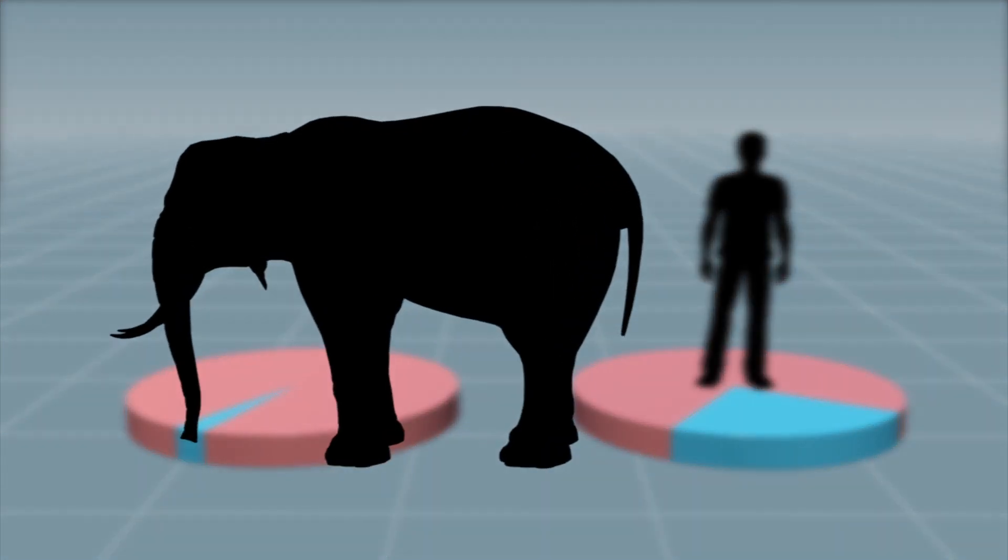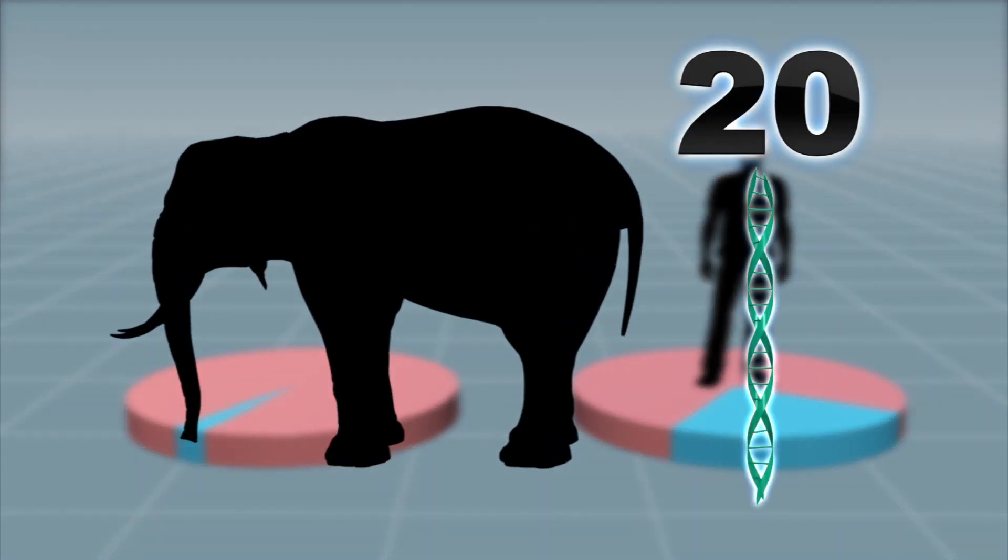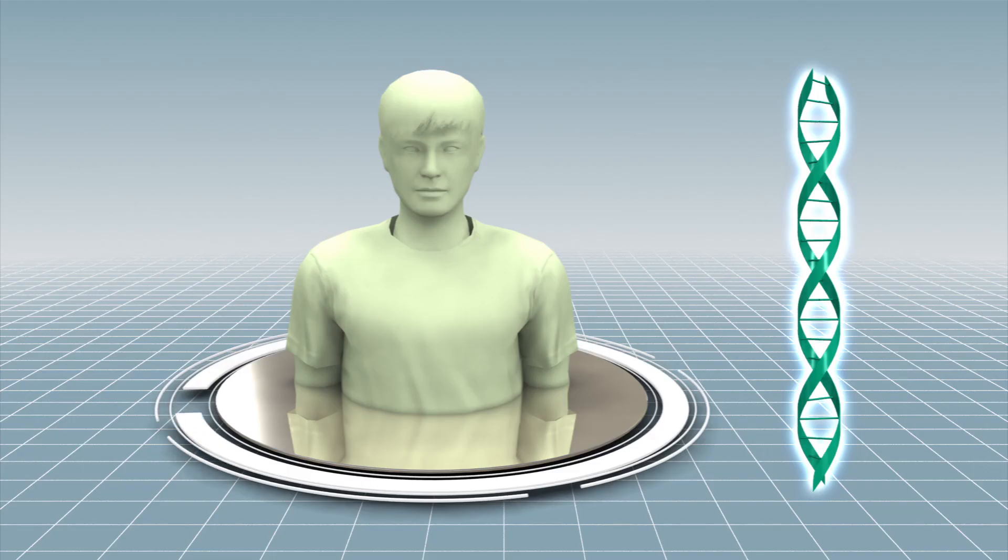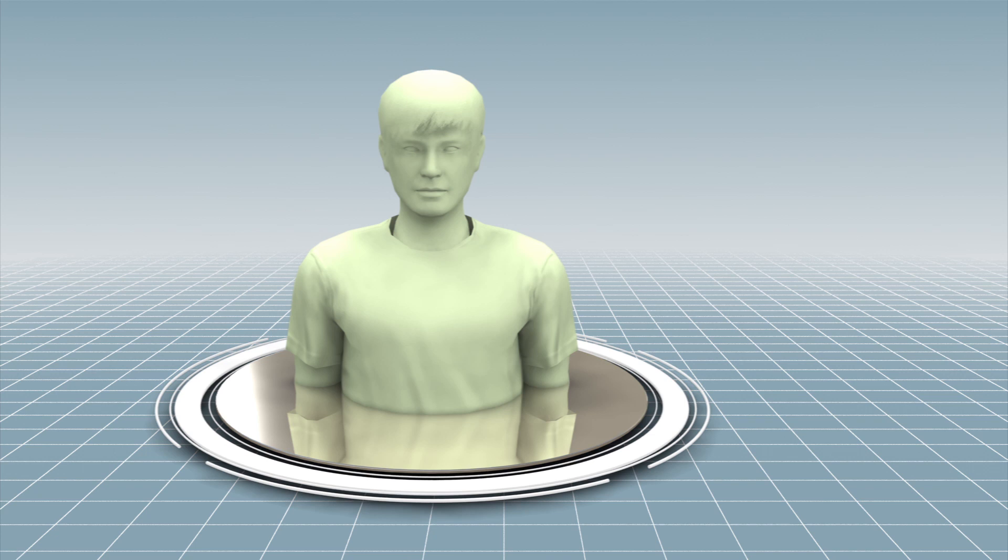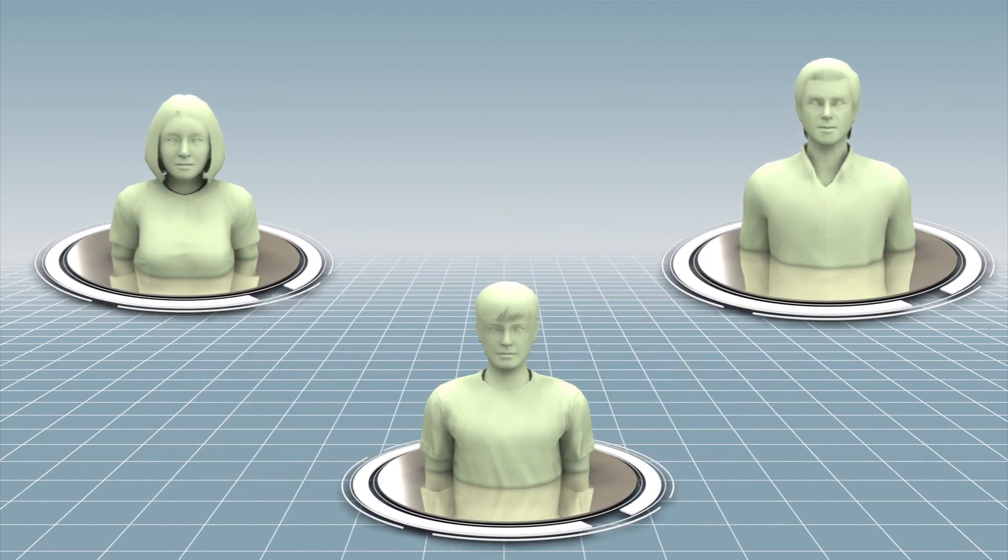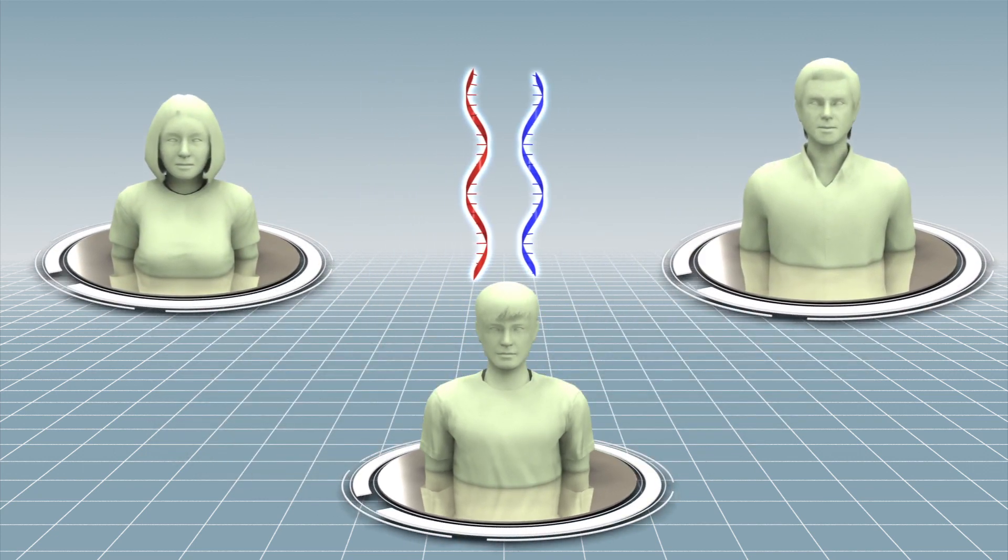Scientists have found that African elephants have 20 copies of a gene called TP53, which creates a protein that suppresses tumors. Humans, on the other hand, inherit only one TP53, one allele from each of their parents. If one of them is defective, cancer is certain to develop sooner or later.